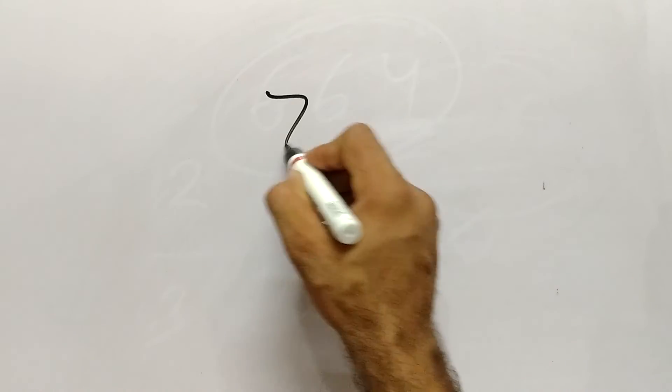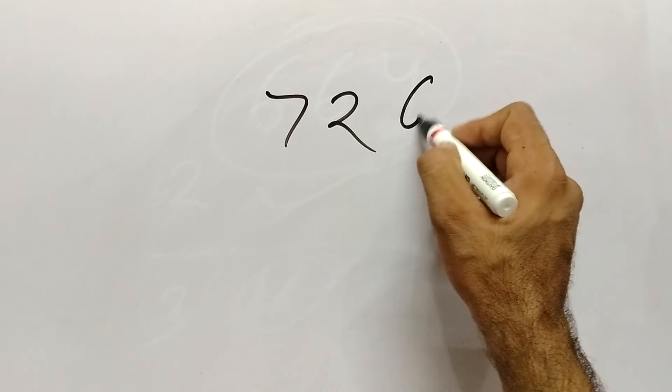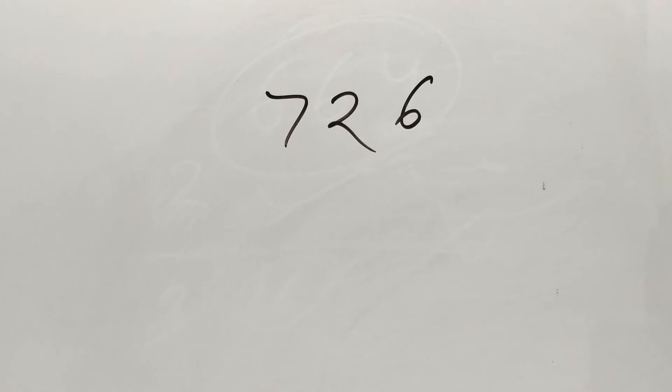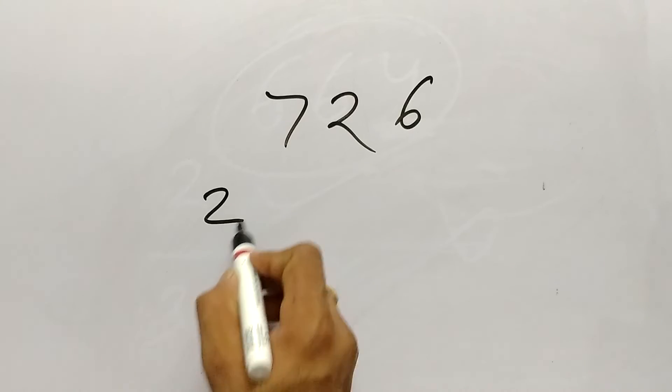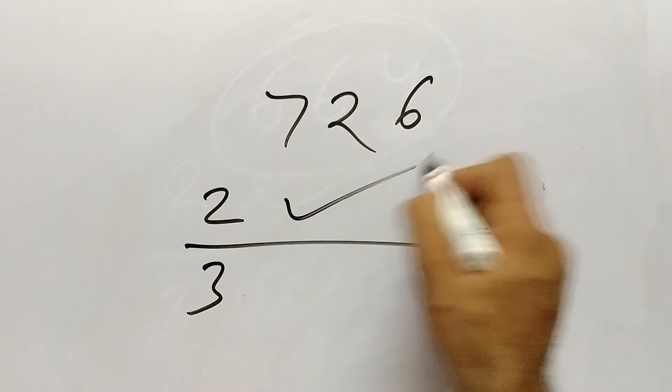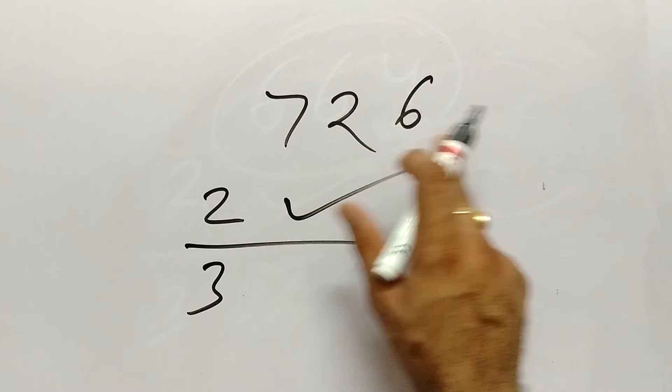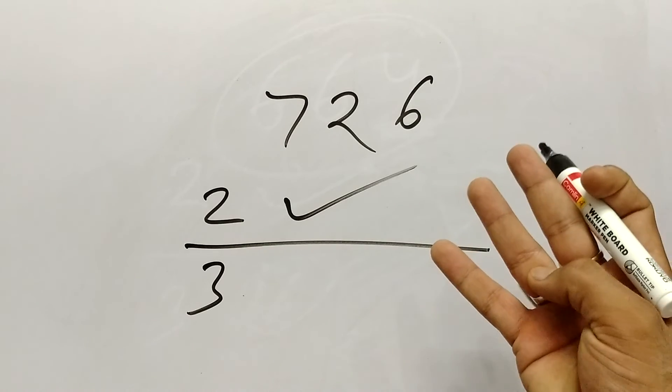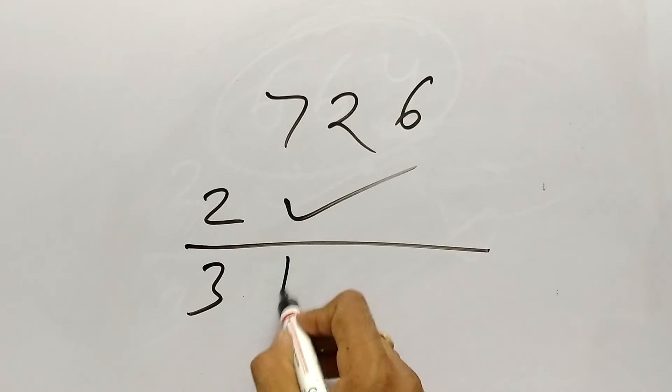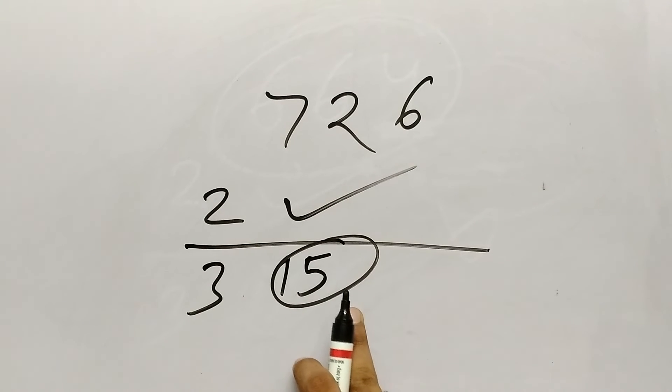Suppose the number is 726. Again 2 and 3 ka divisibility check karenge. Unit place mein even number hai, yes. 3 ke liye kya karenge: 7 plus 2, 9, 9 plus 6, 15. 15 is coming. 3 ka table mein 15 aata hai? Yes, 3 times 5 is 15.